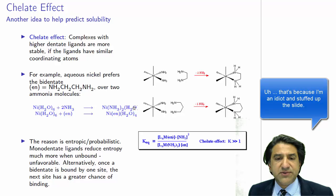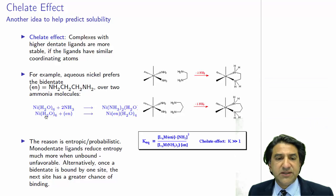So here we have the formation of the NH3, and then we have the formation of the nickel ethylenediamine. And the reason for this is probabilistic. Monodentate ligands reduce entropy when they're more unbound. Now what does that mean?